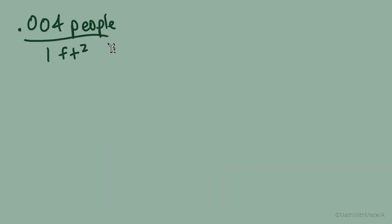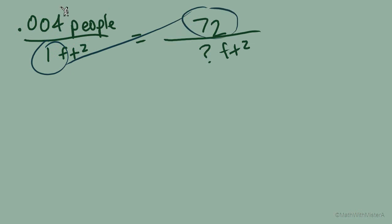We can use this unit rate for population density to answer questions like, how many square feet would be needed if we wanted to accommodate 72 people? Now it's not so clear what number we're multiplying in the numerator to get from 0.004 to 72. We can use instead our steps for solving a proportion. Multiply these two numbers diagonally, and then divide by the third number. 1 times 72, and then divided by 0.004. This gives us a result of 18,000 square feet. So using this population density from earlier, we can calculate how many people, 72, would be in an area of 18,000 square feet.